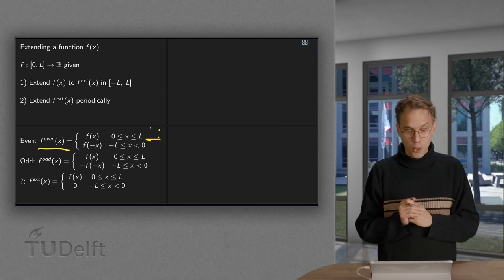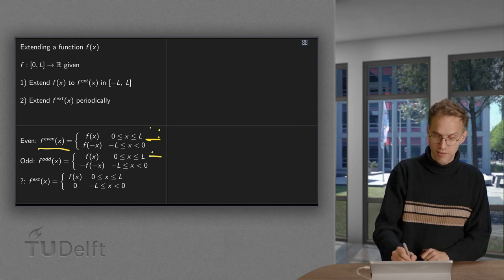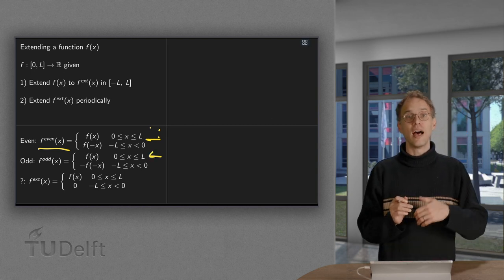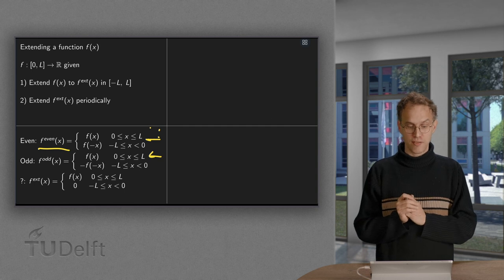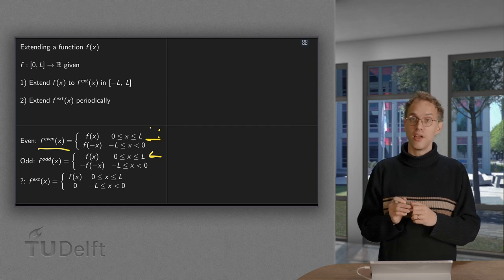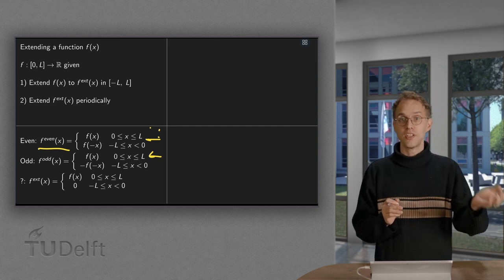We can also make an odd extension of f(x). So again we have f(x) between 0 and L, and then we take minus f of minus x in order to get our function between minus L and 0.